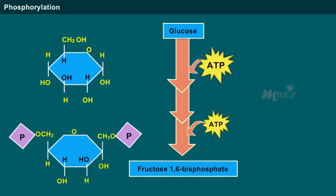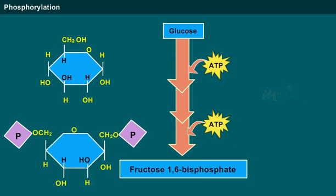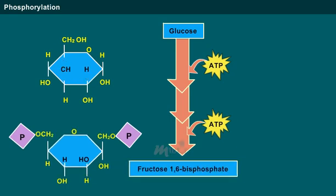However, since 2 ATP molecules are used in the formation of glucose 6-phosphate and fructose 1,6-bisphosphate, the net formation is 2 ATPs along with 2 NADH molecules.